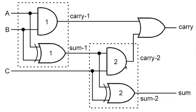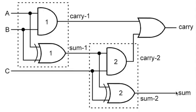The two outputs of half adder one are carry one and sum one, and the two outputs of half adder two are carry two and sum two. In total there are three outputs: carry one, carry two, and sum. To create a single carry output, carry one and carry two are OR-ed together to get a single carry output. So the complete full adder has only two outputs: carry and sum.